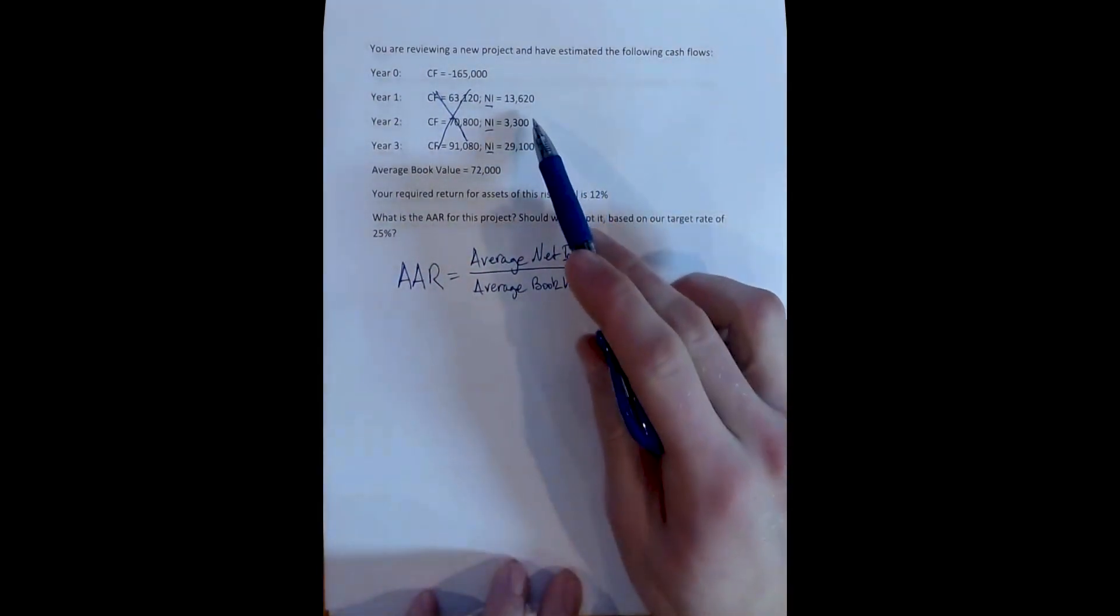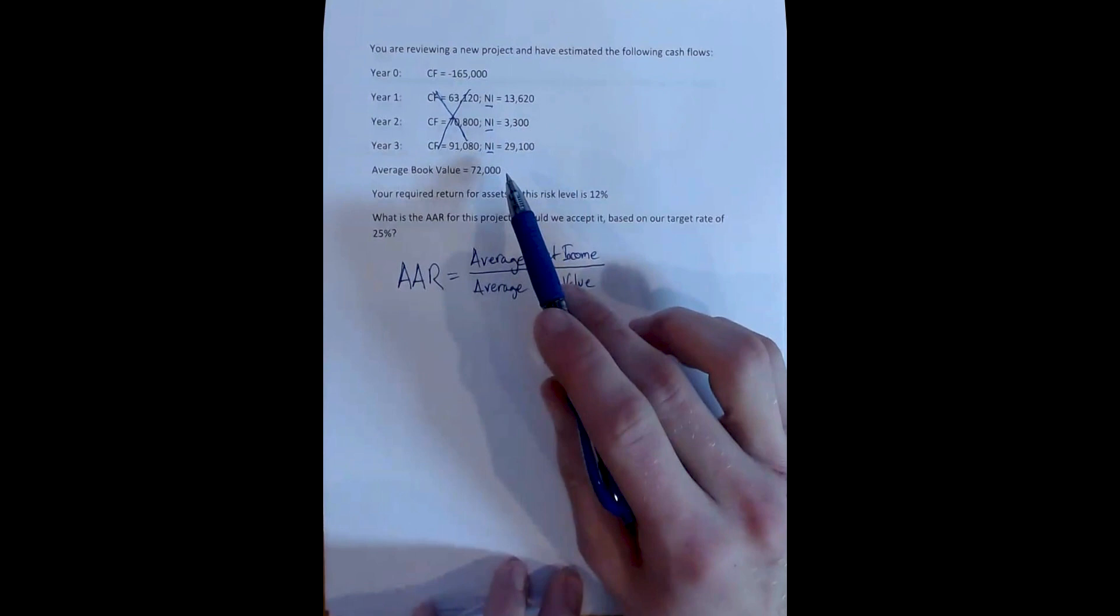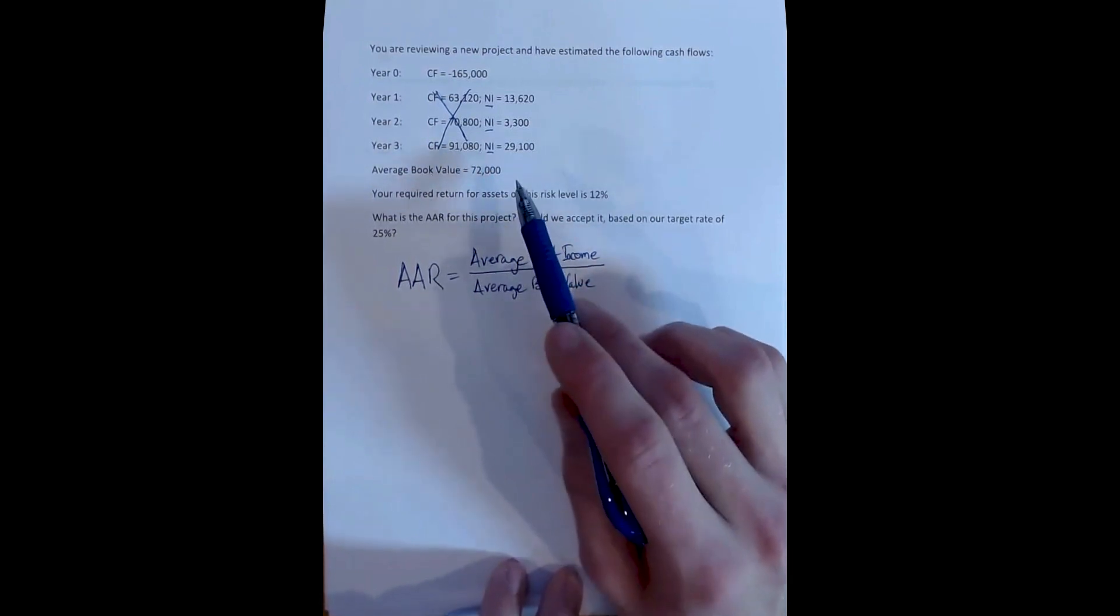And it's important that both of these are at the project level. In other words, if this is a project for a bigger firm, the average net income is not the average net income for the firm, but the average net income for the project itself. Likewise, the book value is not the book value of the firm's assets, but the book value of the assets that are specifically used to operate the project.